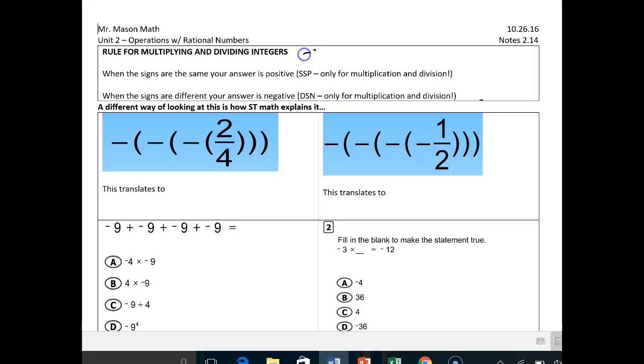Only for multiplication and division though, because remember, negative 3 plus negative 3 is negative 6. However, negative 3 times negative 3 is going to be positive 9. We'll talk about that in a second.